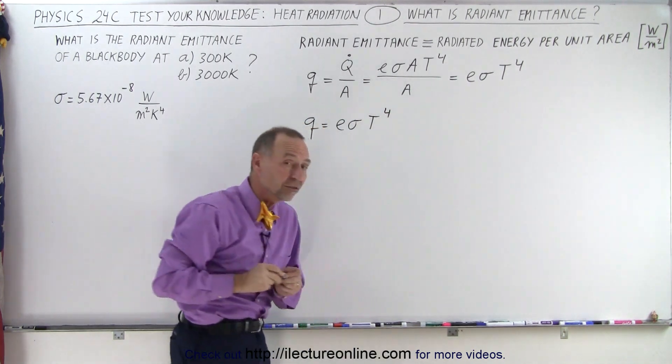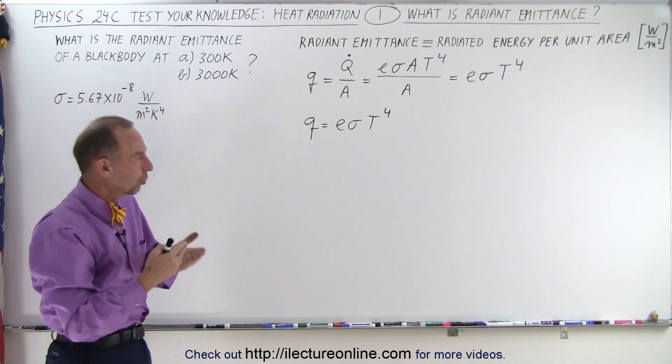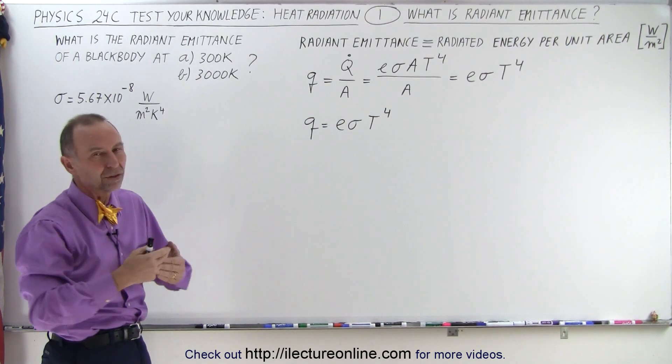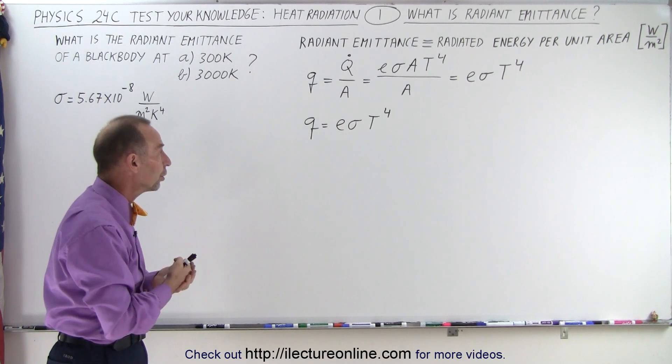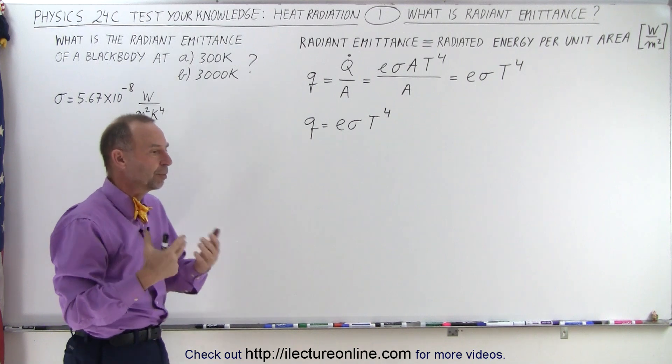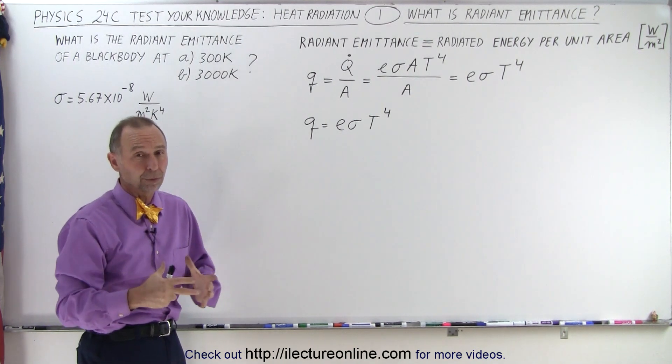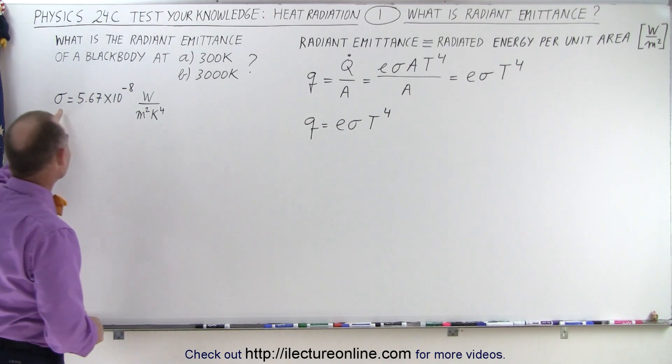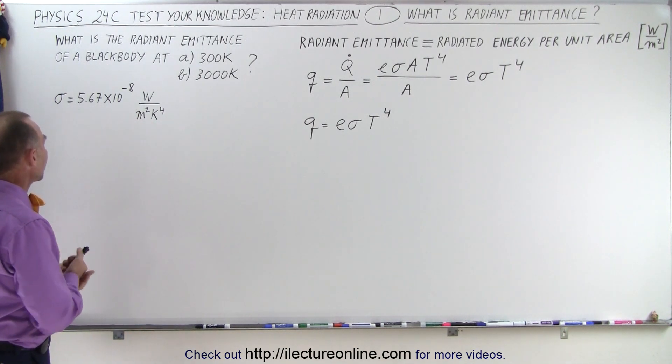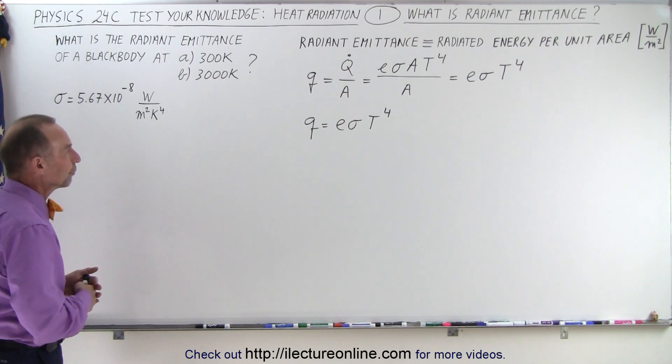Now for most substances E is nearly equal to 1. It's usually somewhere between 0.95 and 1, so we usually take it as 1. But there are substances that have a much lower emissivity, especially insulating materials that they would put on thermos bottles and things like that. Of course we need to know the value of the constant, 5.67 times 10 to the minus 8 watts per square meter per Kelvin to the fourth power.